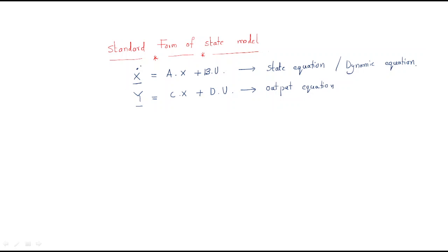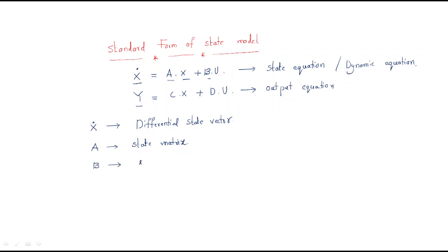Let's define each term. X-dot is the differential state vector. A is the state matrix — the state of the system is represented by this matrix. B is the input matrix, representing the inputs to the system. U is the input vector.